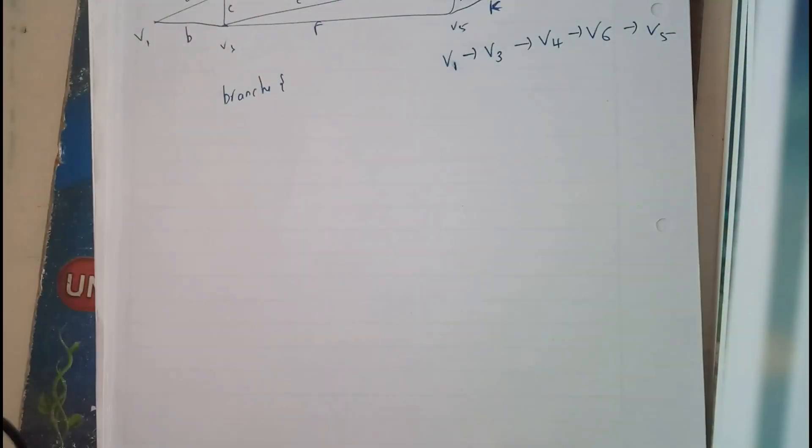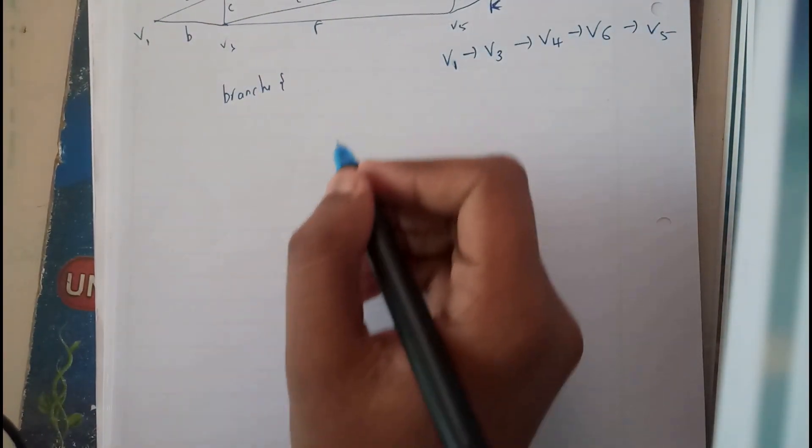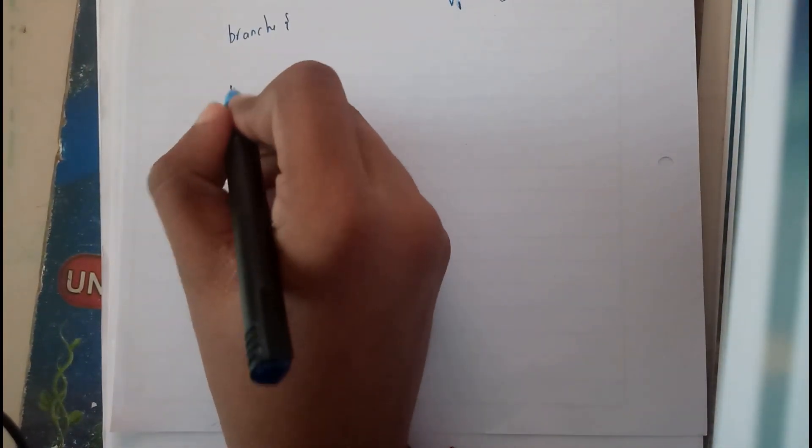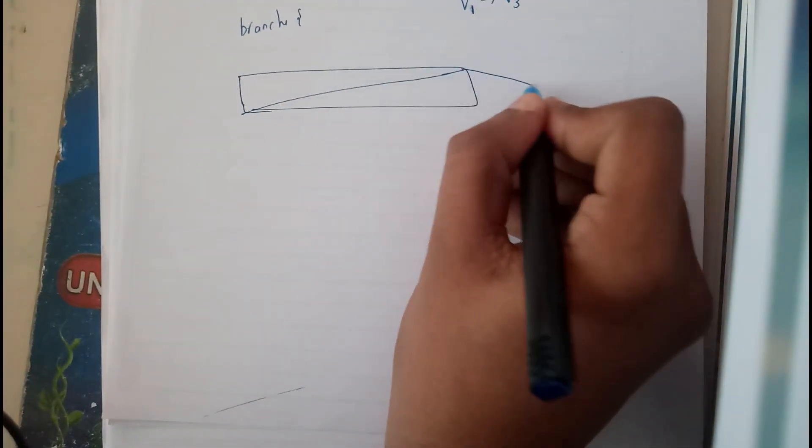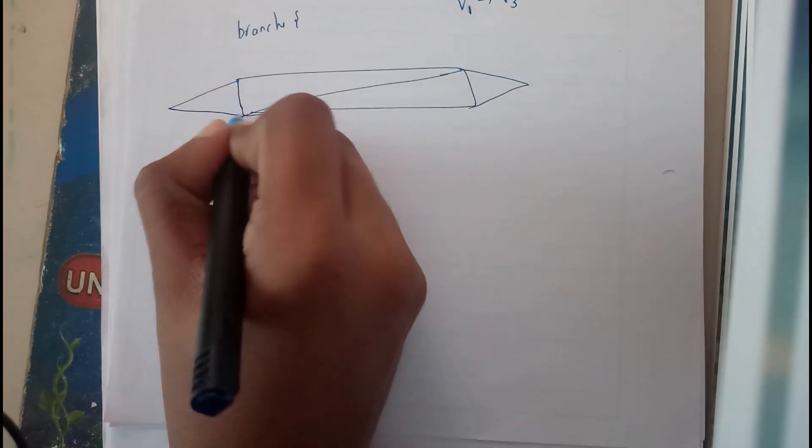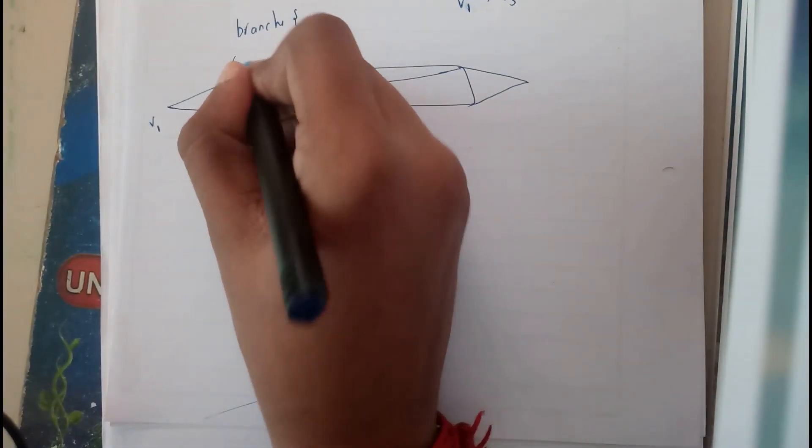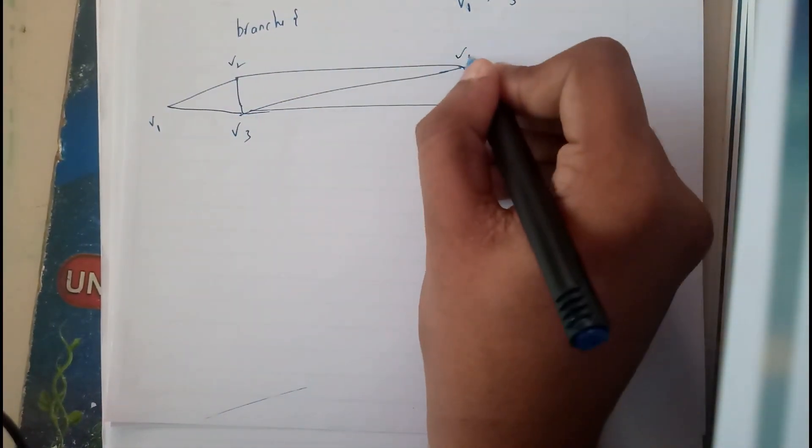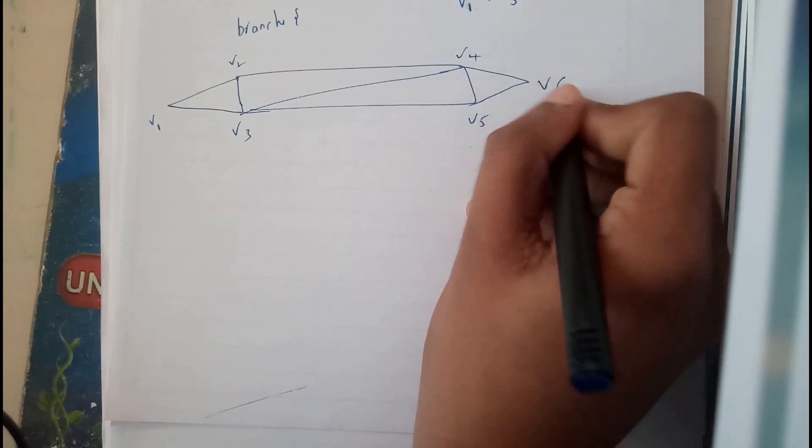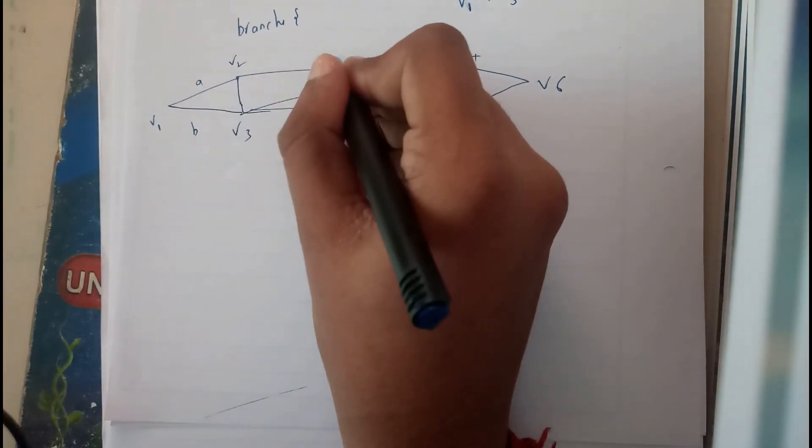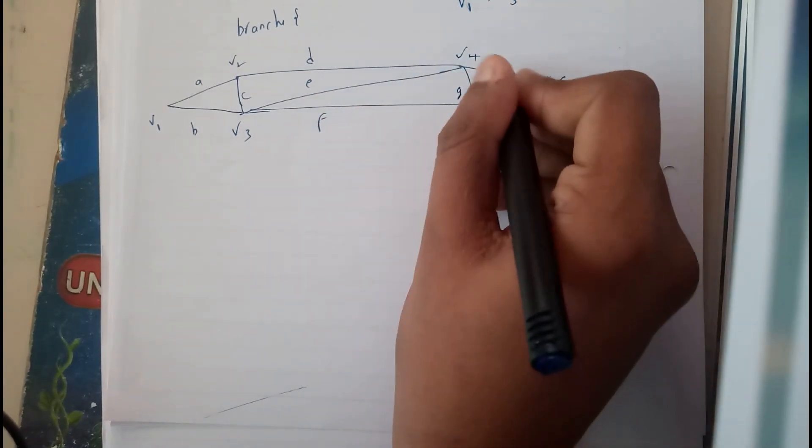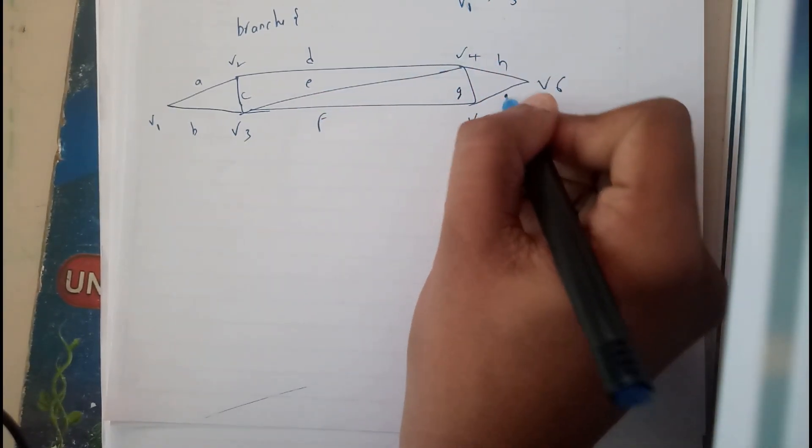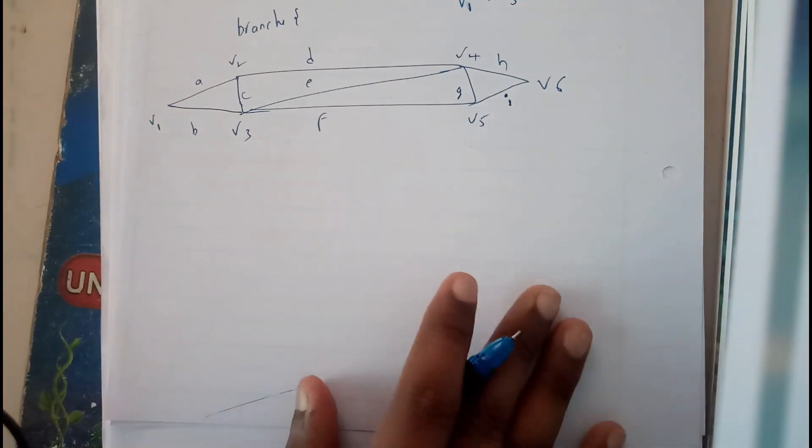Let us take an example like this. V1, V2, V3, V4, V5, V6, and edges A, B, C, D, E, F, G, H, and I. I think we've drawn it perfectly.